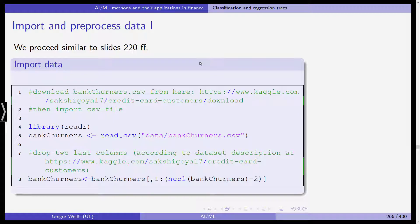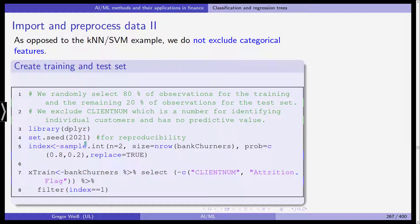That's why CSV files are a nice input format for many statistics programs. We dropped the last two columns according to the dataset description. Then bank churners, that's the object we create from the imported object. In line eight here, we are dropping the last two columns, so we're only using columns one, two through the number of columns minus two. For example, if the original object included 10 columns, we are now using only the first eight ones.